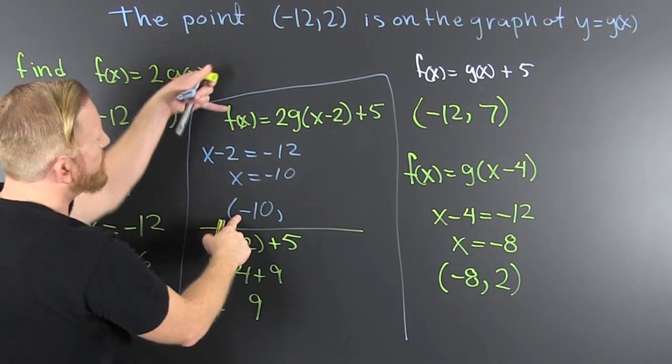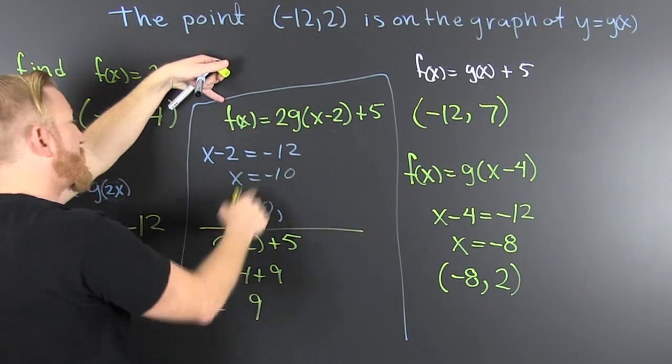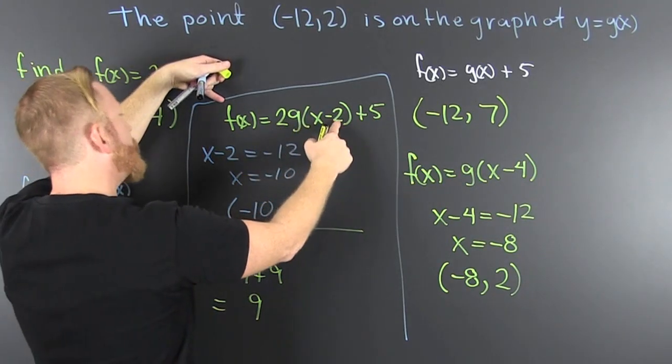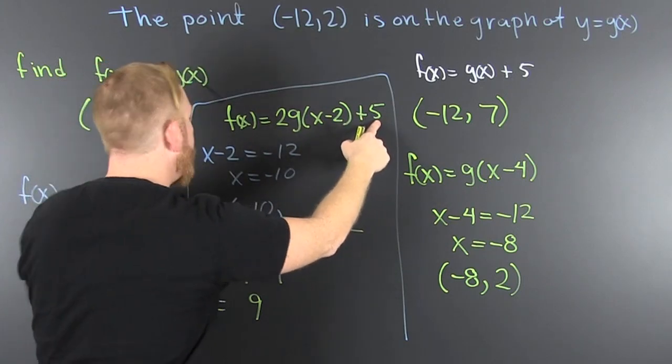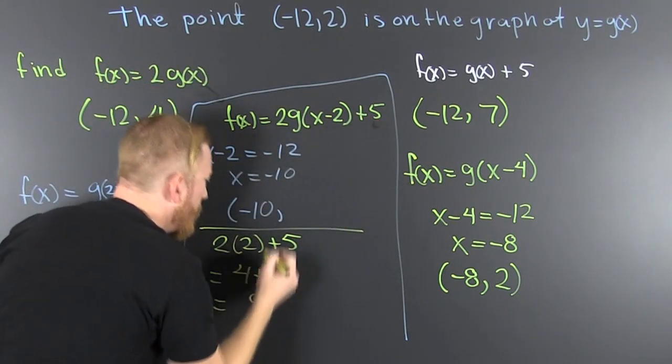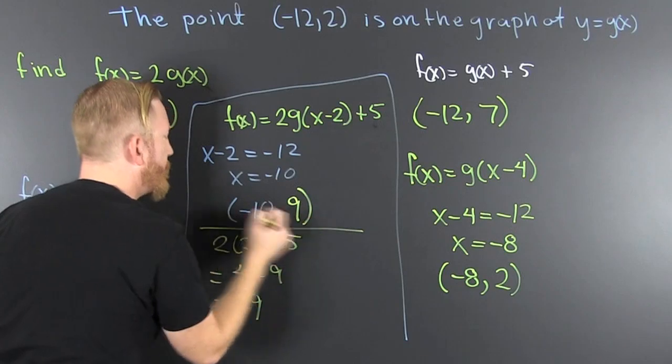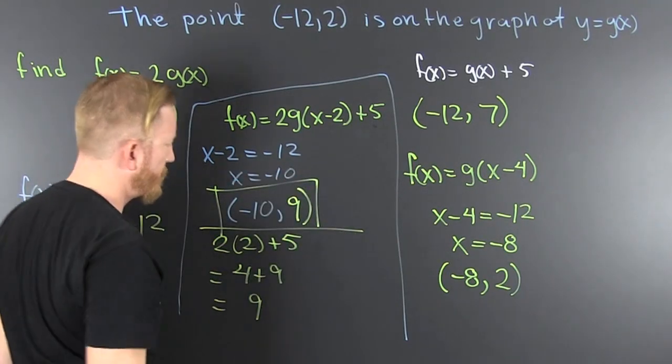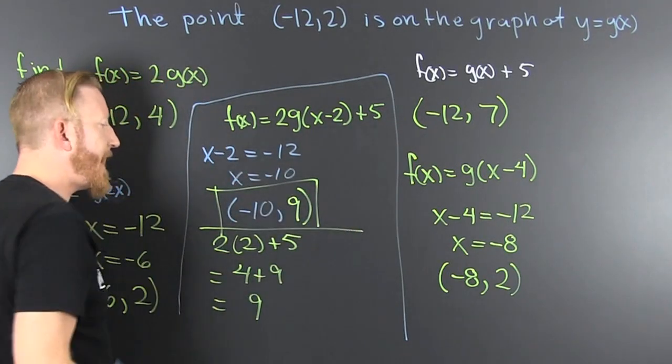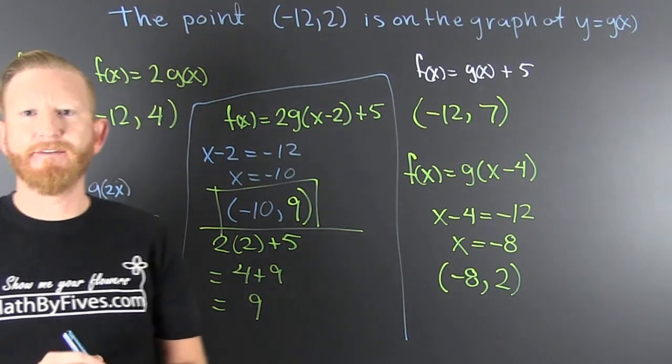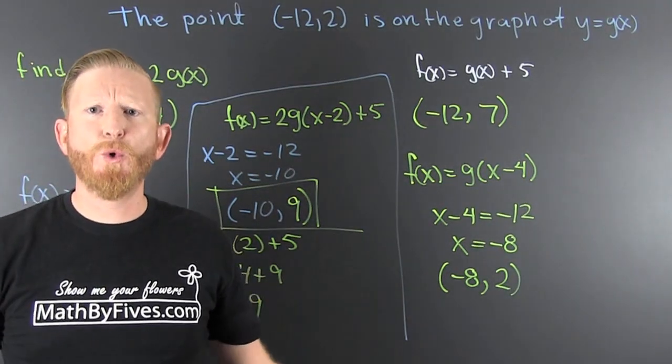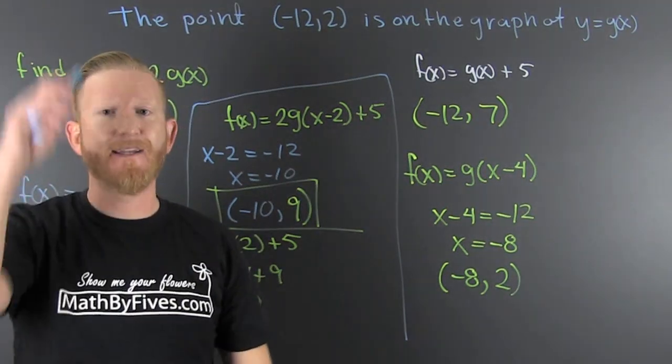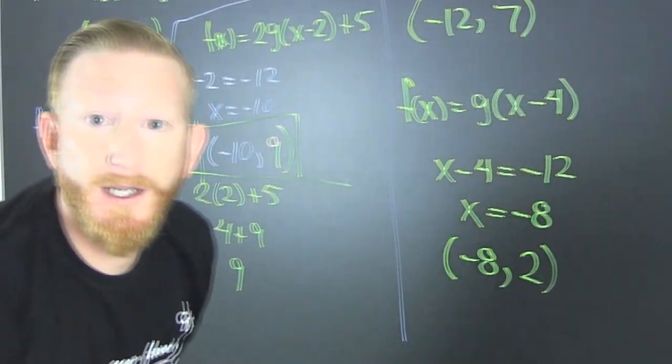So our new y value is 4 plus 5, or 9. So if we're finding our f(x) and it's 2 times g of (x minus 2) plus 5, that's going to be (-10, 9). Boom. Tip of the hat, no wag of the finger. Translations, dilations, hooray!